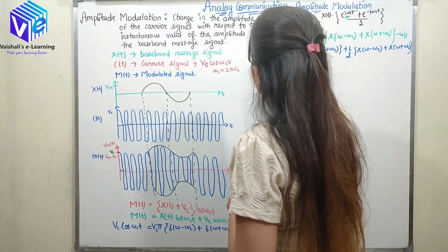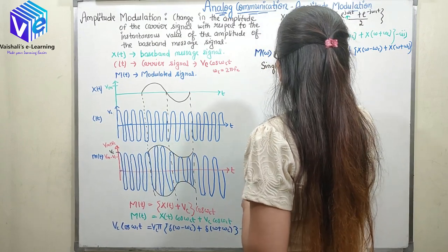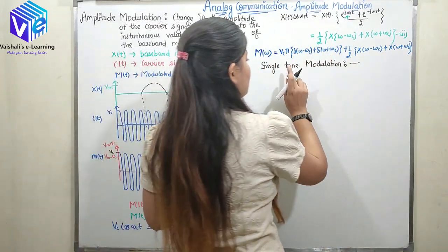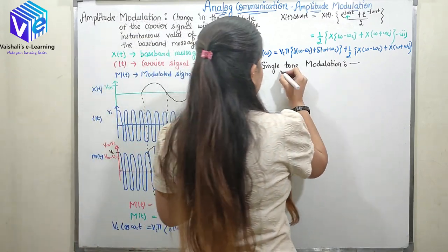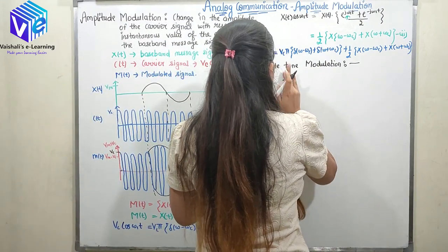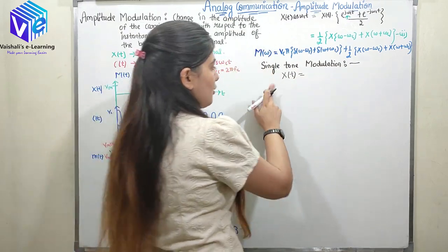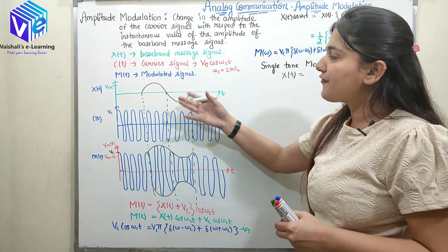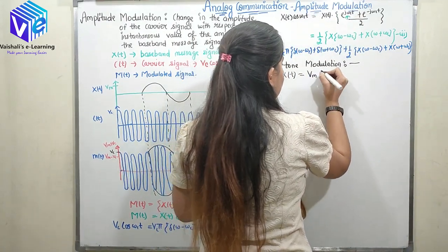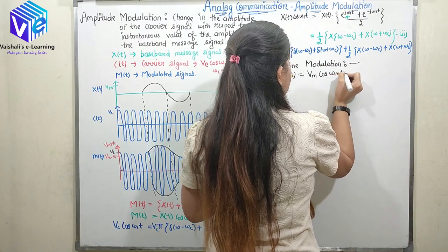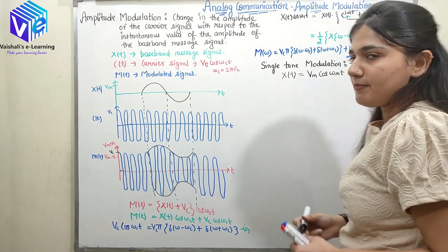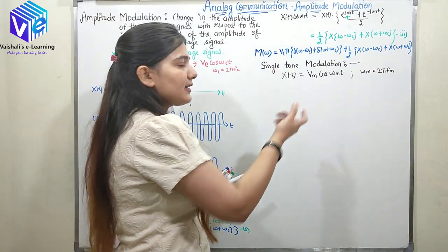Now coming to single tone modulation. Single tone modulation is modulation using a single frequency component of the message signal. Now I am taking only one frequency component of the message signal. x(t) can be represented — taking only one frequency — as Vm·cos(ωMt), where ωM = 2πfM. So my frequency is fM, and this is my single tone modulation.